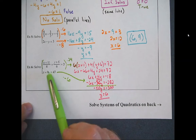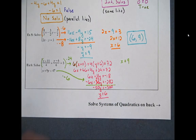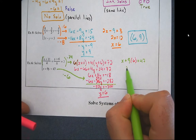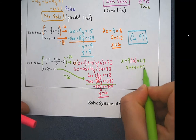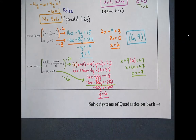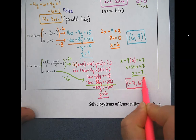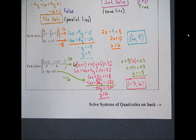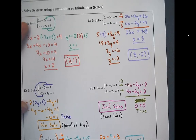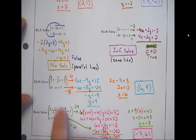Back-substituting y equals 6 into the simpler equation: x plus 9 times 6 equals 47, so x plus 54 equals 47, and x equals negative 7. The two lines intersect at (negative 7, 6). To summarize: solving linear systems involves standard form or slope-intercept form, possibly clearing fractions, and handling special cases like no solutions or infinite solutions.